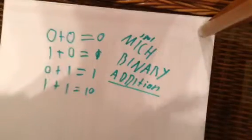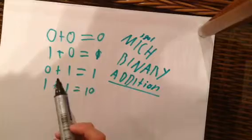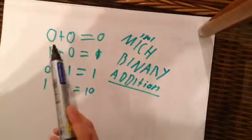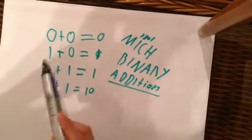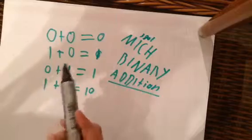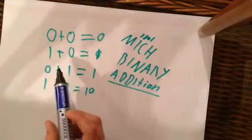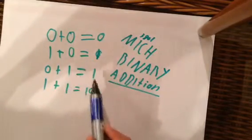What I've got here are the basic rules of Binary Addition. Remembering these four rules which are 0 plus 0 equals 0, pretty simple. 1 plus 0 equals 1, the vice versa of that, 0 plus 1 equals 1.